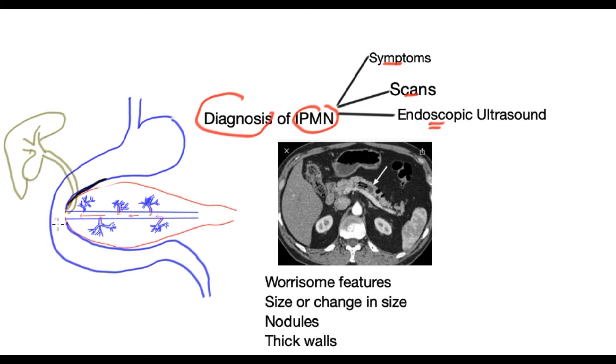Here's a cartoon to better understand the condition. This is the stomach, the gullet, the liver, the bowel tube, and at the back of the stomach is the gland called the pancreas.